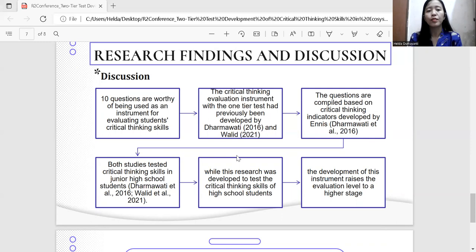It was found that the use of two-tier evaluation instrument to measure students' critical thinking skills could be done. The critical thinking evaluation instrument with the one-tier test had previously been developed by Darmawati 2016 and Walid 2021. Both studies tested the critical thinking skills of junior high school students, while this study was developed to test the critical thinking skills of high school students.